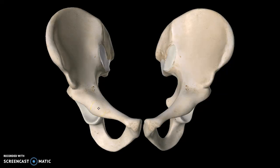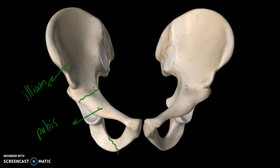We're going to talk about the pelvis today. The pelvis is made up of three different fused bones. The top portion is what we call the ilium, the middle portion is what we call the pubis, and the lower portion is the ischium.